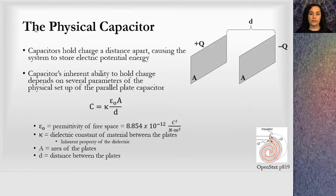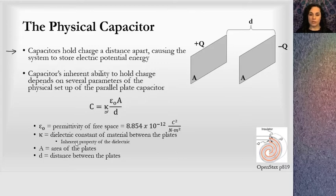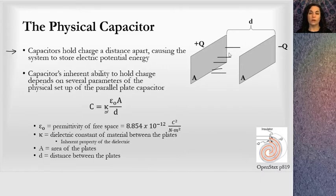The first consideration is the physical capacitor — what's actually going on that allows it to hold charge. A capacitor's primary function is to hold charge a distance apart, and this causes the system to store electric potential energy. The capacitor's inherent ability to hold charge depends on the area of the capacitor plates, the distance between those two plates, and a kappa value — kappa is the dielectric constant of the material between the plates. We could put some substance in between, and that would affect the charges because they'd be influenced by the electric field of whatever substance we put in there.